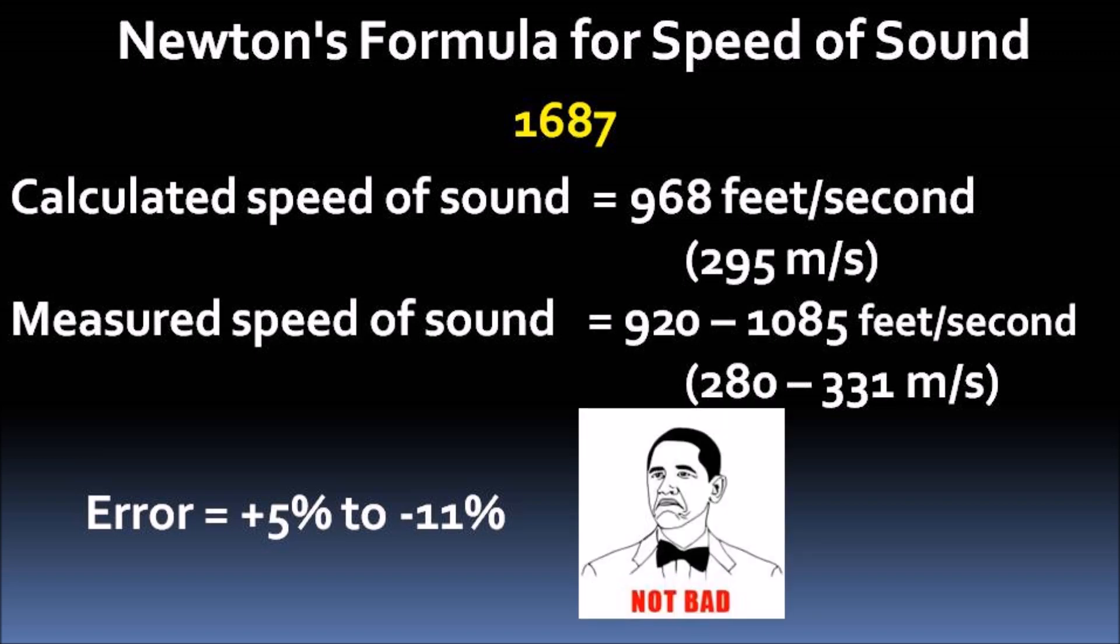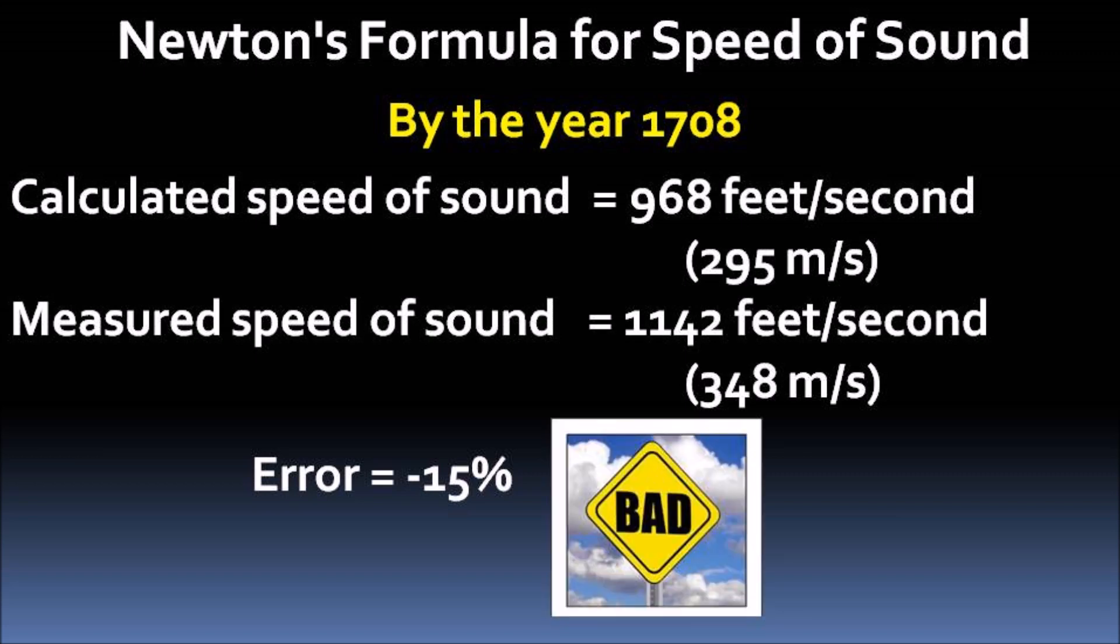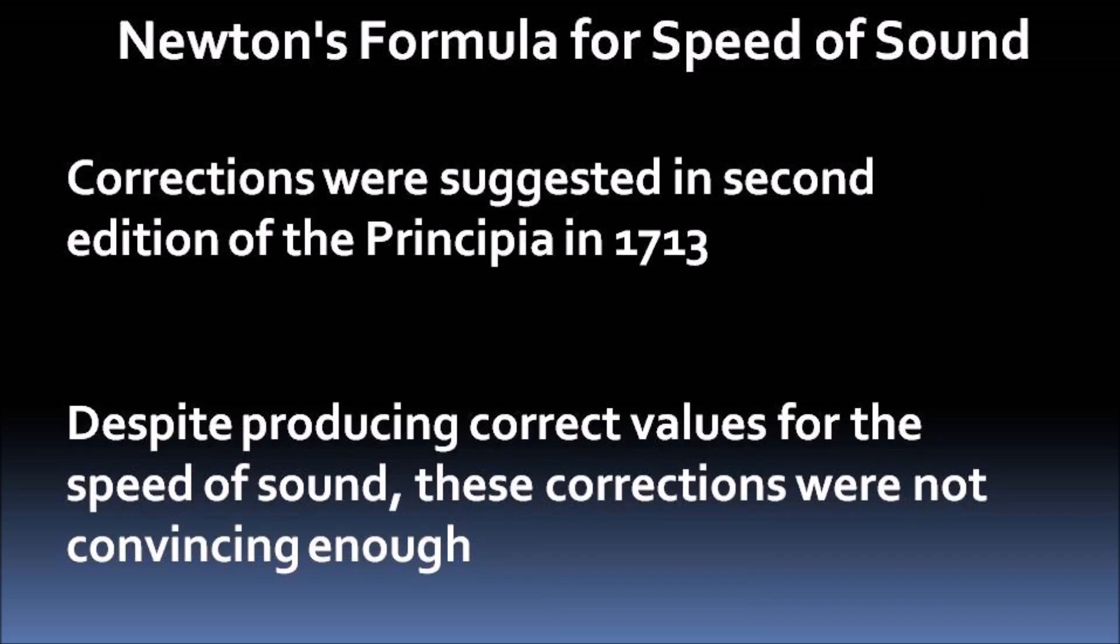That was not bad. However, with more accurate measurements, the speed of sound by Newton's equation was 15% less than the measured values. And this was bad. This difference was not small and Newton suggested several corrections in the second edition of the Principia in 1713.